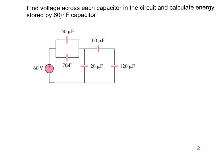We have two groups in the circuit. This is the first group and this is the second group, connected in series. We have to simplify these groups, find the equivalent capacitance for each group, and then replace them with a circuit of two capacitors connected in series.